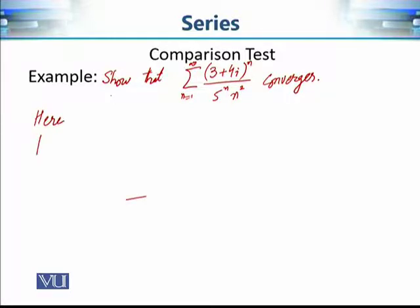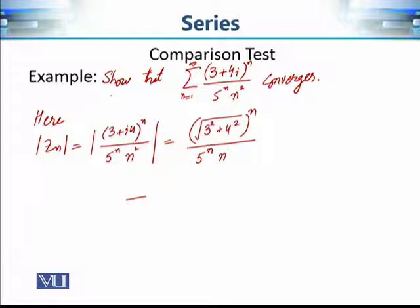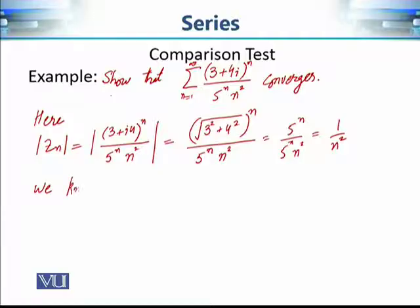We can see that applying only the necessary condition would be difficult here, so we apply the comparison test by computing the modulus of zₙ. This equals (√(3² + 4²))ⁿ / (5ⁿ · n²) = 5ⁿ / (5ⁿ · n²). Since the numerator is just the real number 5ⁿ, its modulus is the same, and simplifying gives us |zₙ| = 1/n².